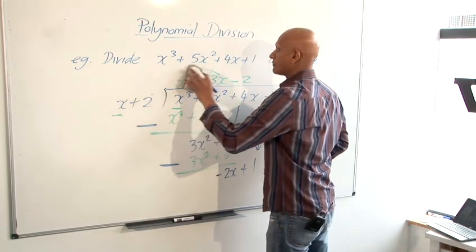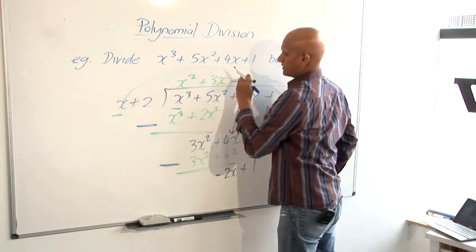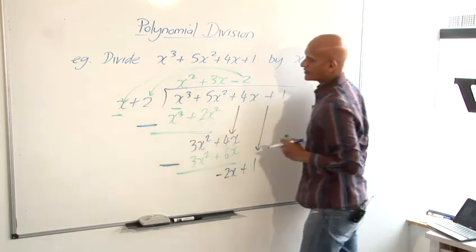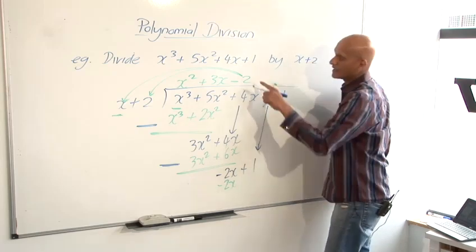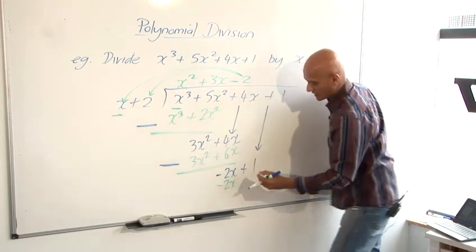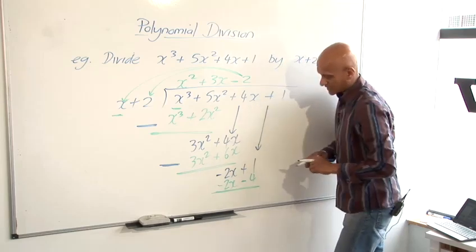And again, I'm going to multiply that minus 2 with both of those. So minus 2 times x is going to give me minus 2x. And minus 2 times 2 is going to give me minus 4. And subtract yet again.